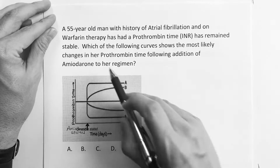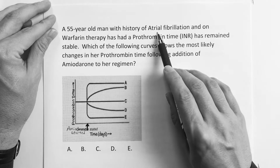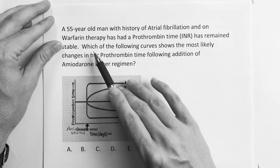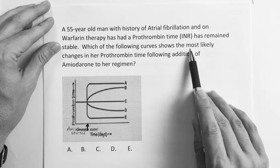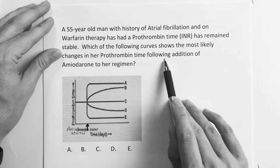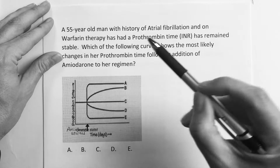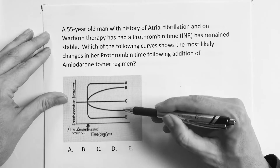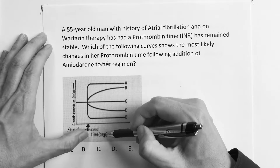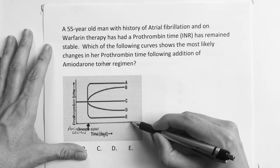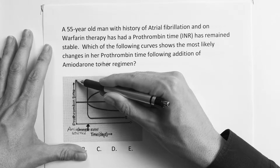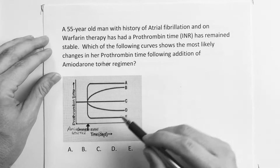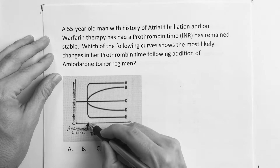Alright guys, the first question says: a 55-year-old man with a history of atrial fibrillation on warfarin therapy has a prothrombin time that has remained stable. Which of the following curves shows the most likely change in prothrombin time following the addition of amiodarone to their regimen? On the graph, the x-axis is time and the y-axis is prothrombin time. Amiodarone was started at a marked point on the graph.